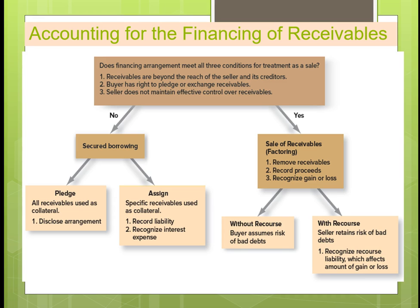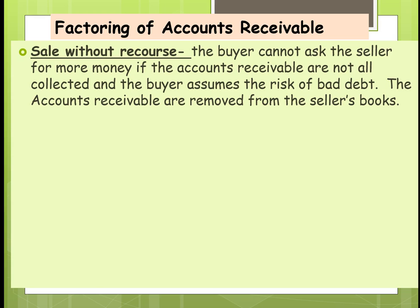There are two ways that you can do factoring. Without recourse, the buyer assumes the risk of the bad debt. With recourse, the seller retains the risk of some of the bad debt. In a sale without recourse, the buyer cannot ask the seller for more money if the accounts receivable are not all collected, and the buyer assumes the risk of bad debt.